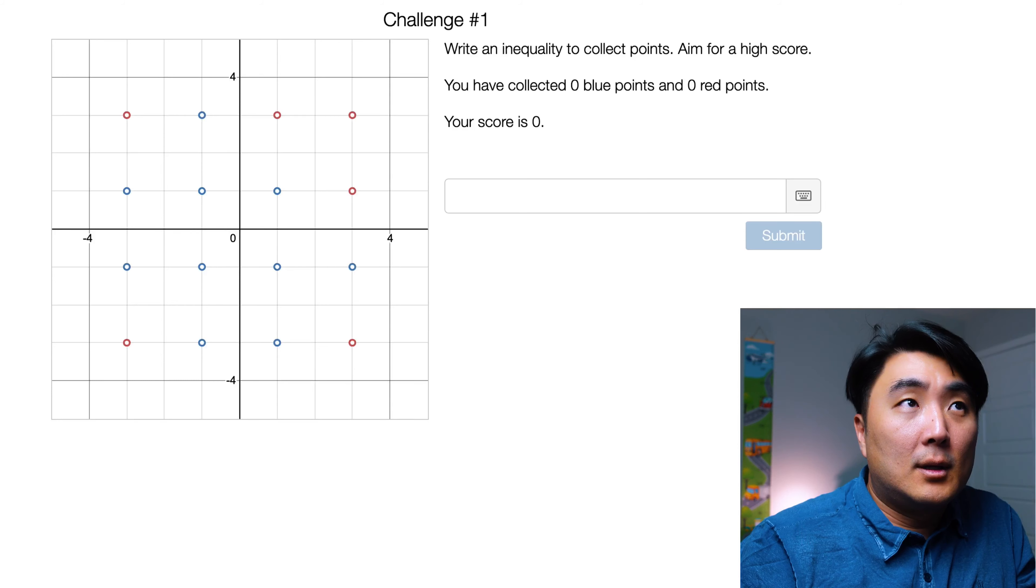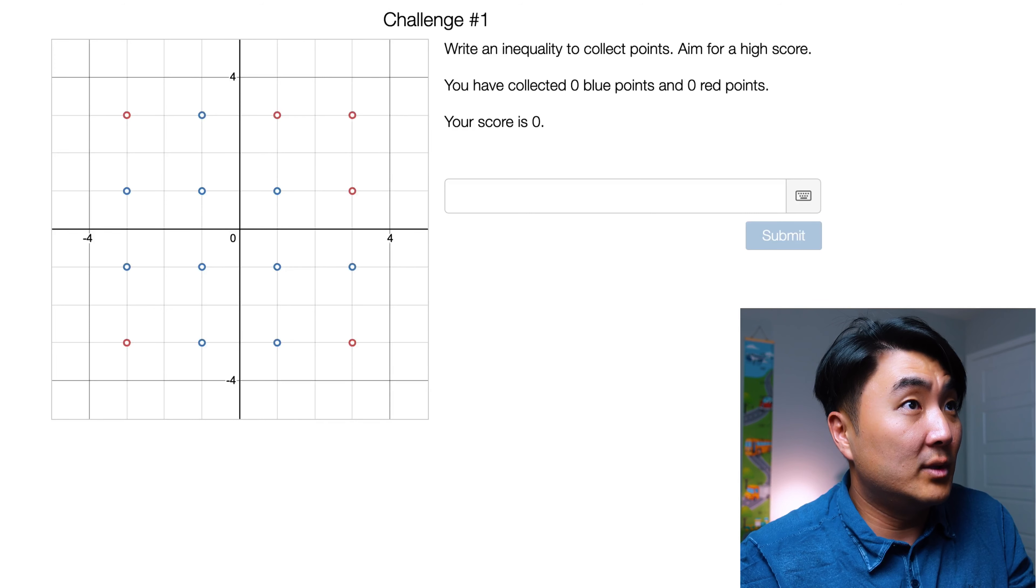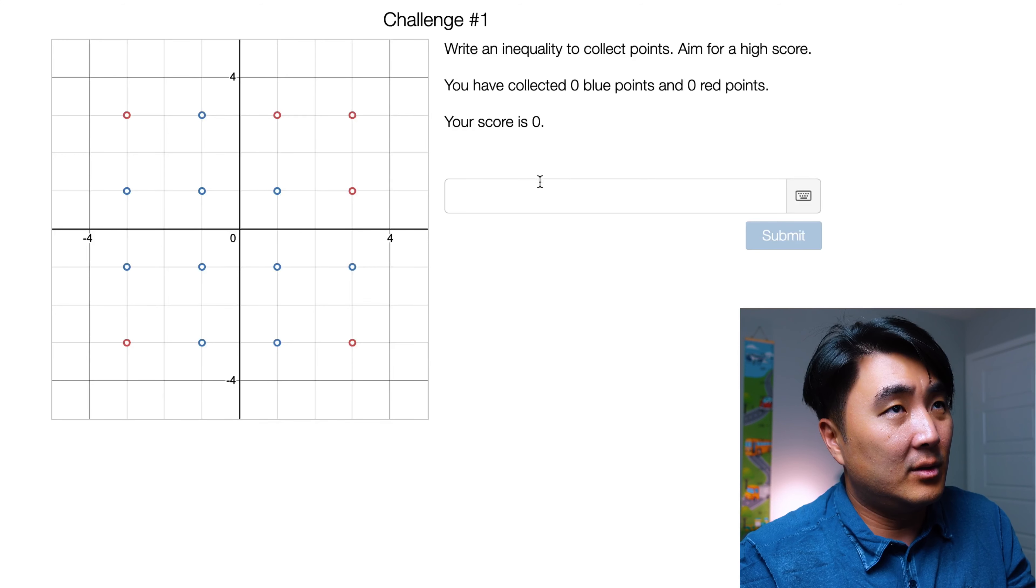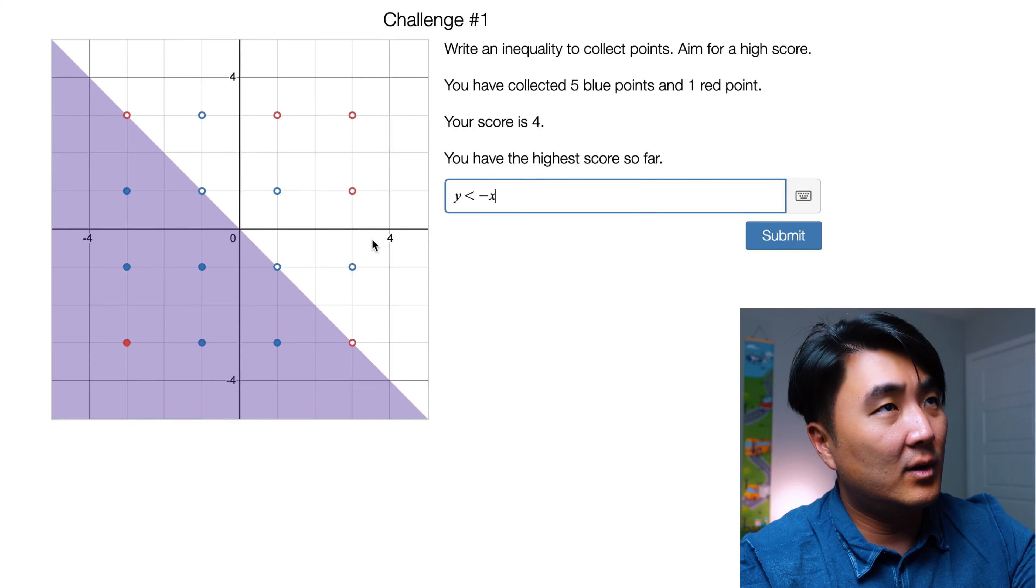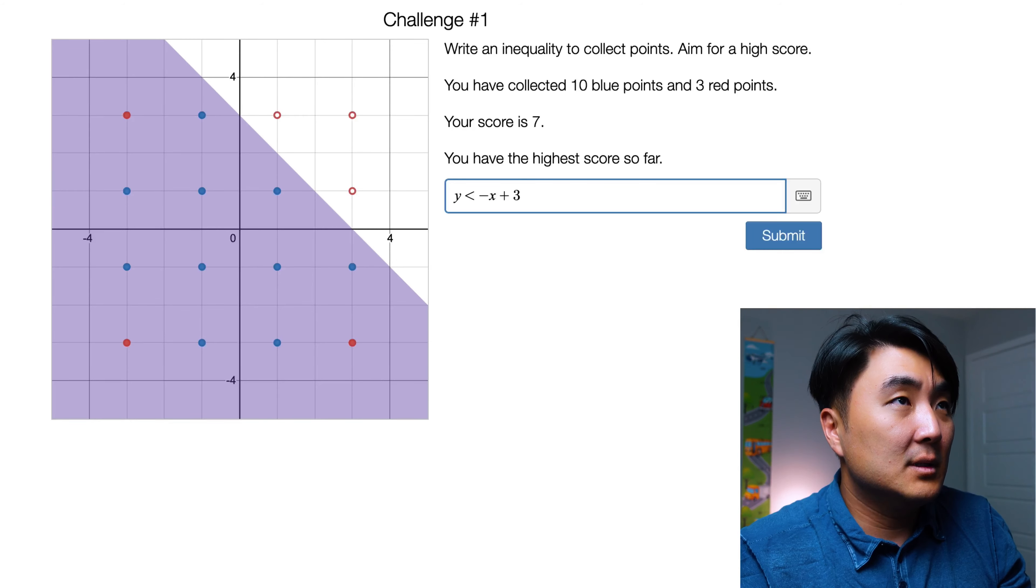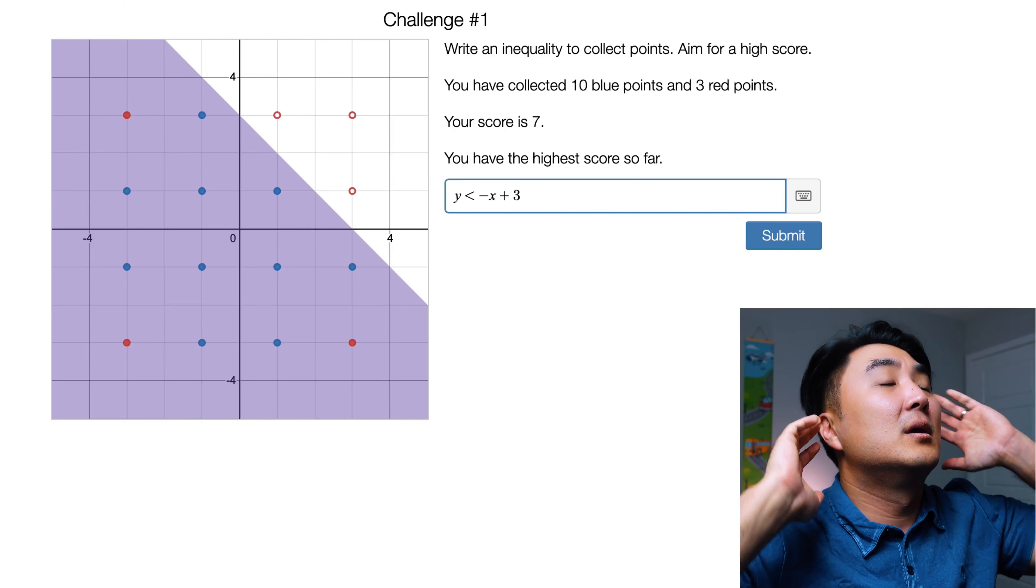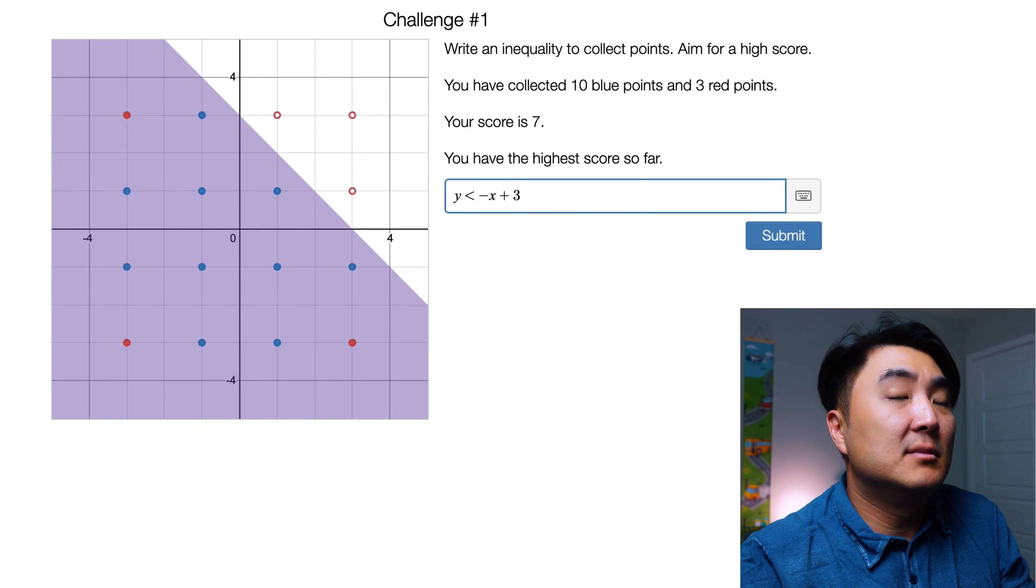Screen five. Challenge number one, right in it. Okay, so we have to write our own inequality. Collect all the blue points and minimize the number of red points that you can get. Okay, so I want to avoid this group here because any other way you cut it, you might collect all the blue points, but you're going to collect more red points. And I think these three red are the only ones that we're going to be able to avoid. So let's do Y less than negative X because I want a negative slope. And then let's move up. Let's give it an intercept at three. Yeah. Y less than negative X plus three. Score seven. And I think that's the best score you can get because I just can't think of another way to do this where you get all the blue points and minimize the number of red points.